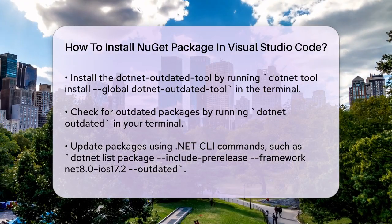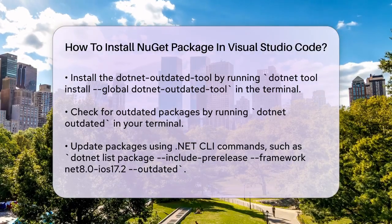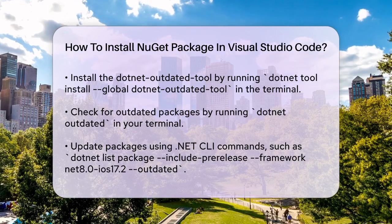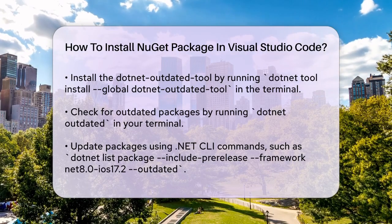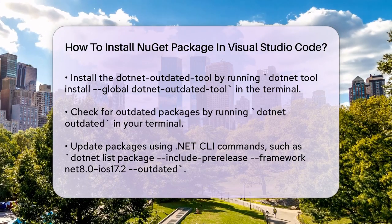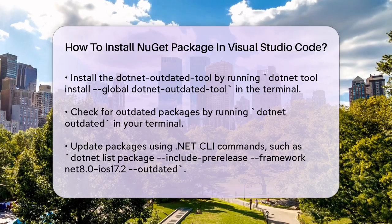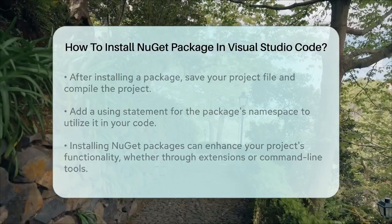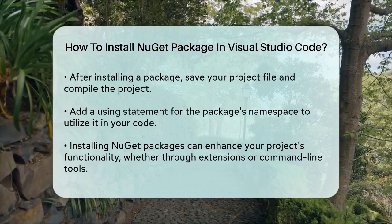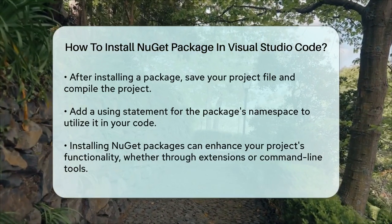For instance, to check for outdated packages, you can run dotnet-outdated in your terminal. This command will show you which packages have newer versions available. You can then update these packages using dotnet CLI commands like dotnet list package --include-prerelease --framework net7.0 --outdated to see what needs updating.